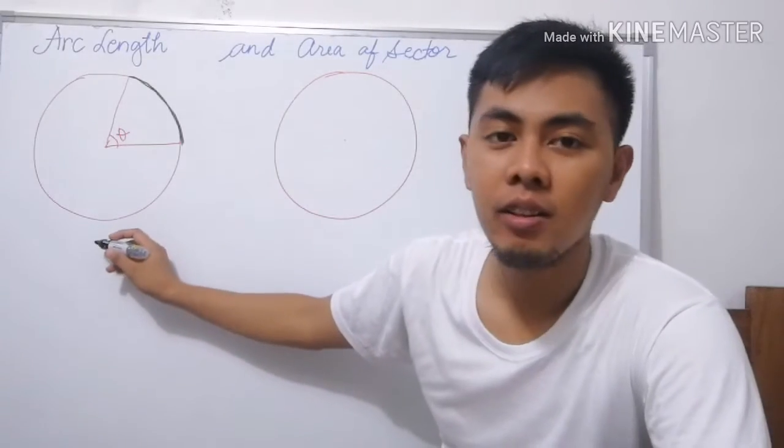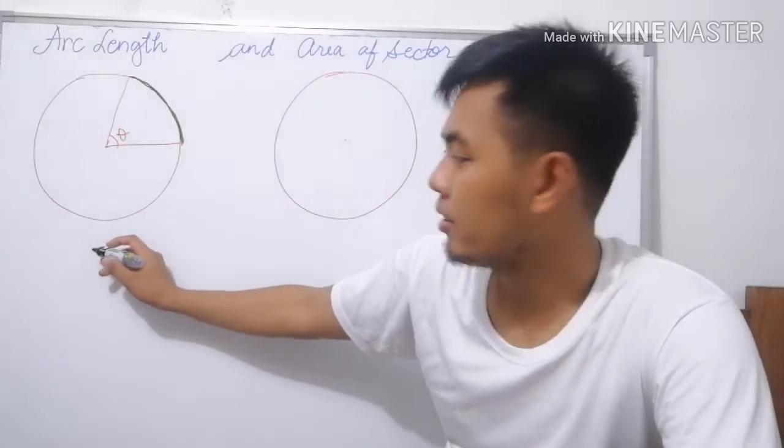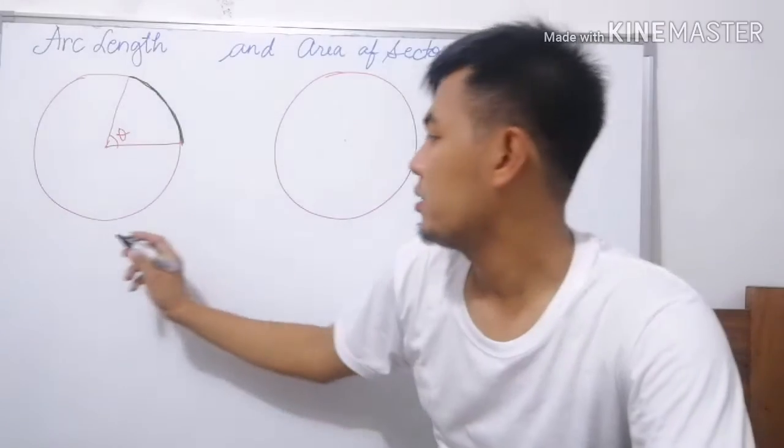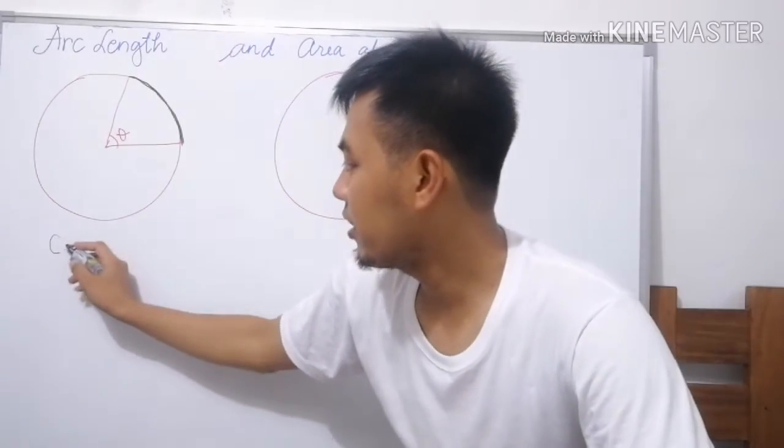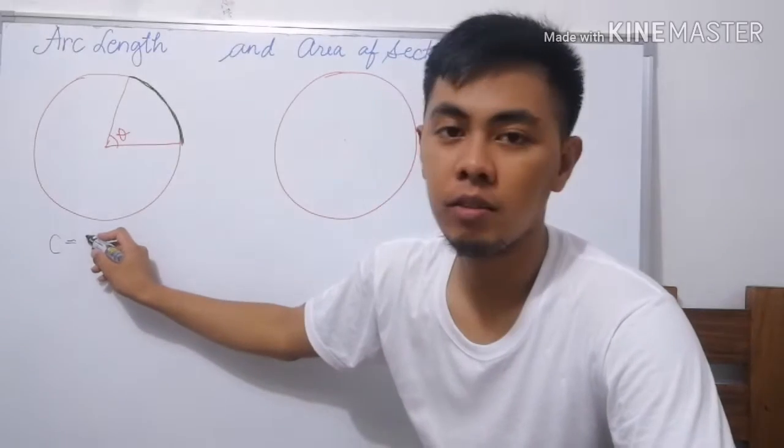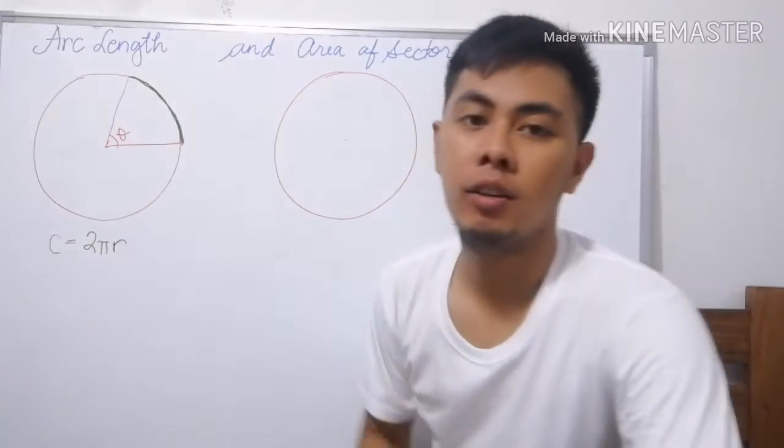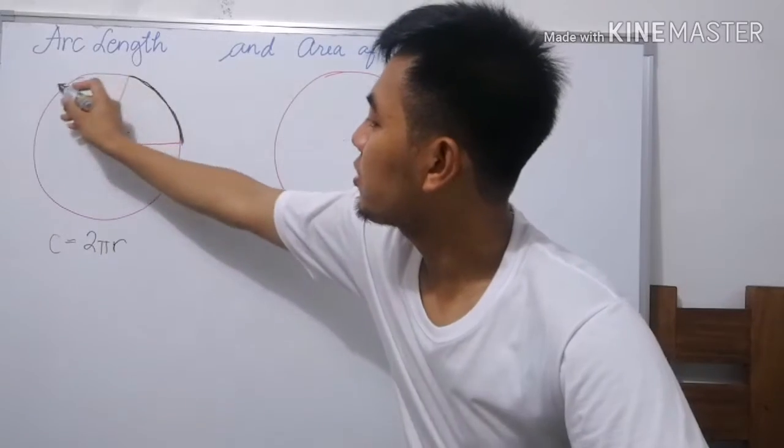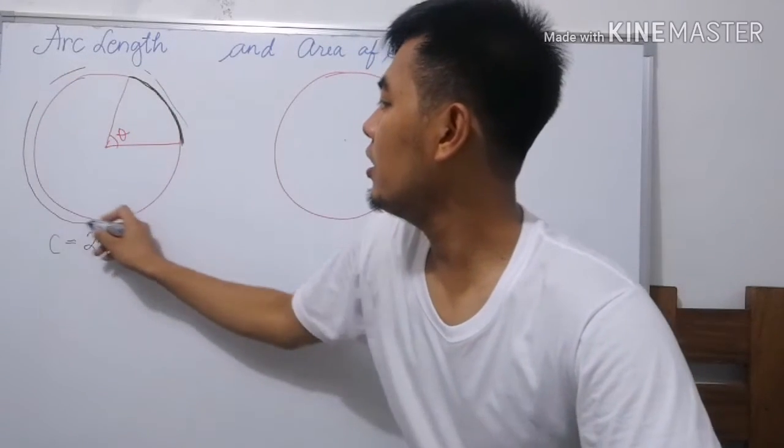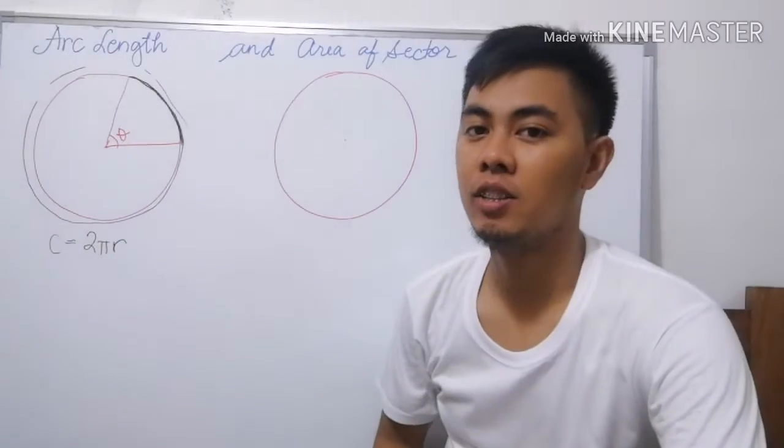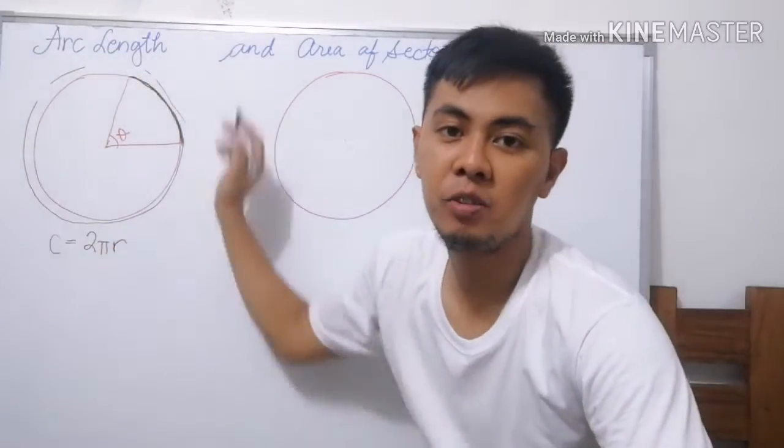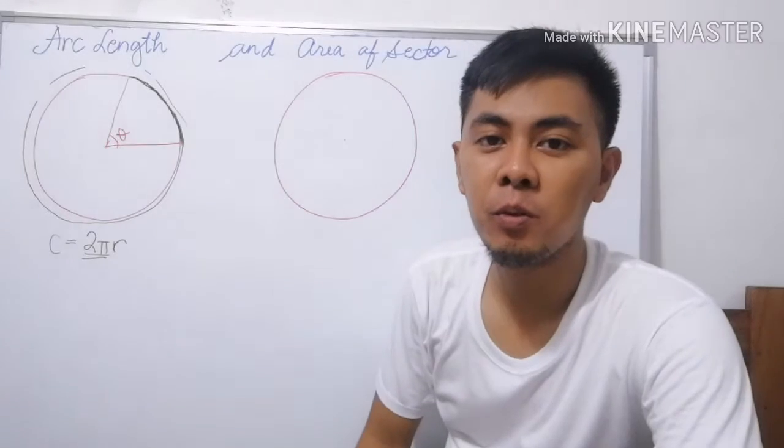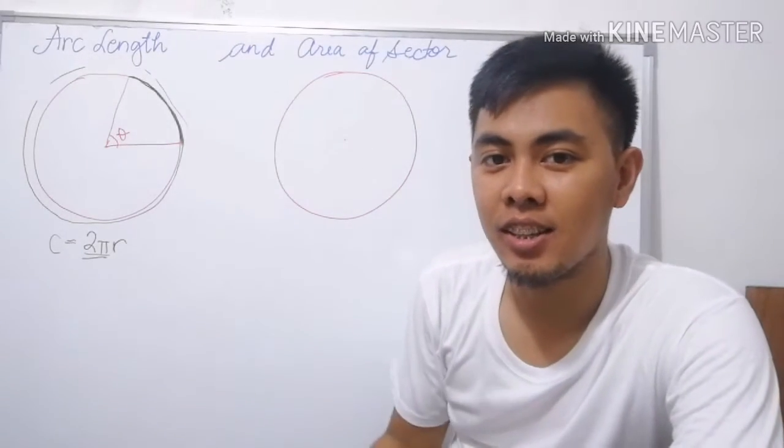First, let's try to recall the length or the circumference of the circle. We all know that the circumference of the circle is 2πR, which means there is one revolution. 2π is equivalent to 360 degrees.